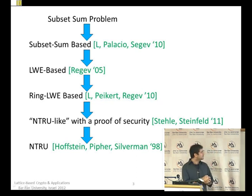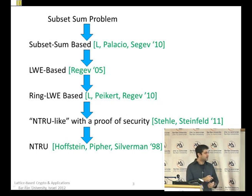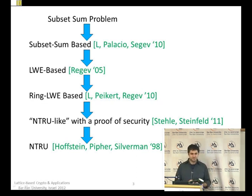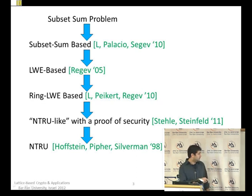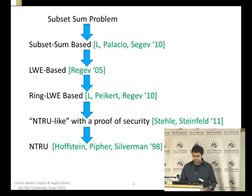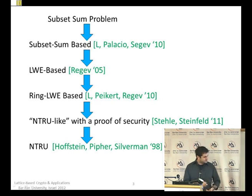I'm going to define the subset sum problem again and give you a really simple subset-sum-based CPA-secure scheme — it requires nothing except the hardness of the subset sum problem. Then we'll see how a small modification gets you an LWE-based scheme with a pretty simple proof, as we saw in the previous talk.